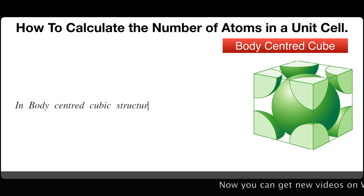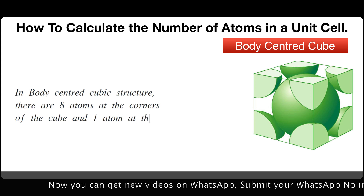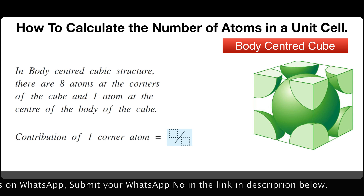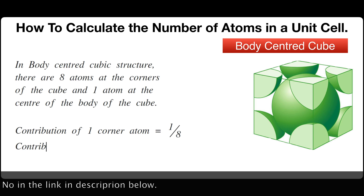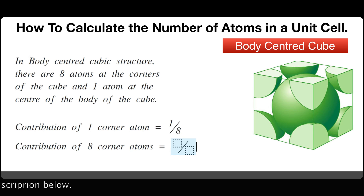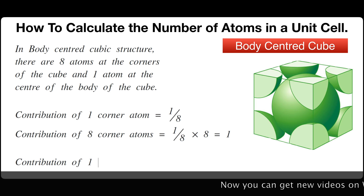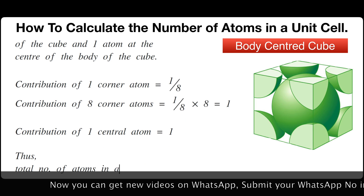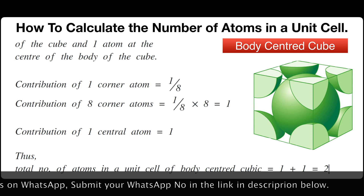In body-centered cubic structure, there are eight atoms at the corners of the cube and one atom at the center of the body of the cube. Therefore, the contribution of eight corner atoms equals one-eighth times eight, which equals one. And the contribution of one central atom equals one. Thus, the total number of atoms in a unit cell of body-centered cubic structure is one plus one, which equals two.